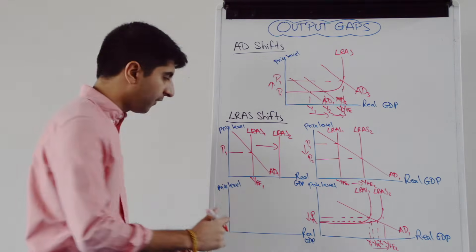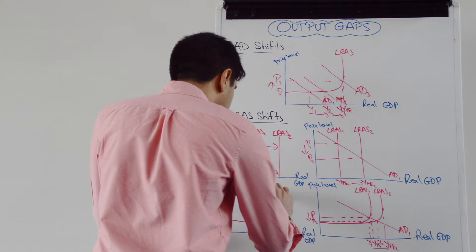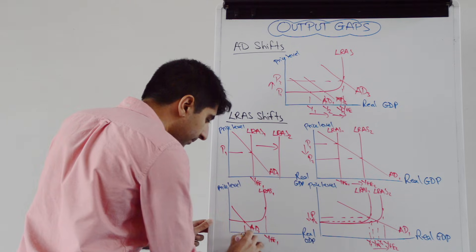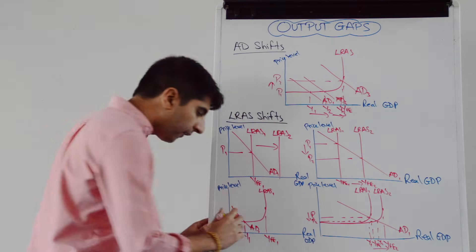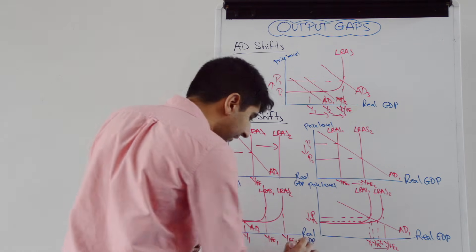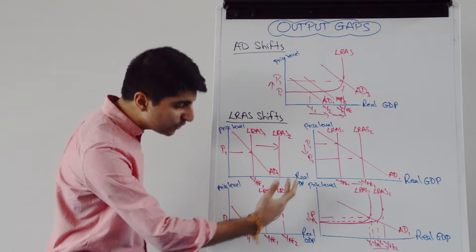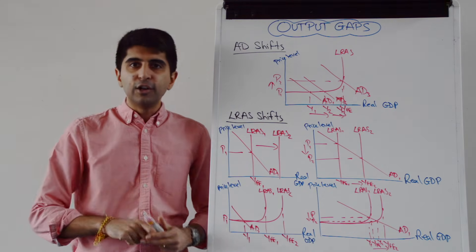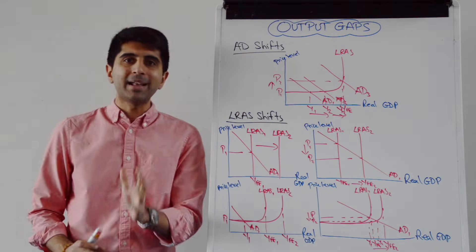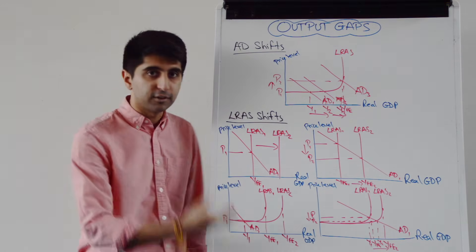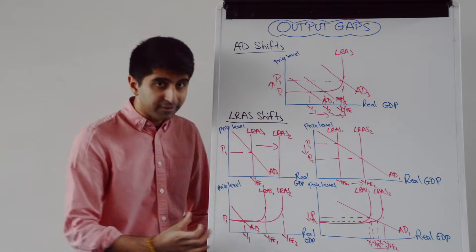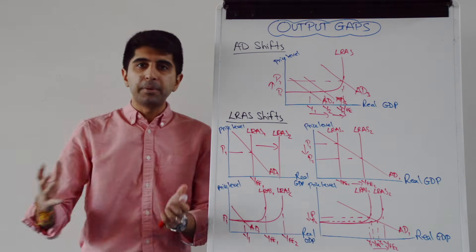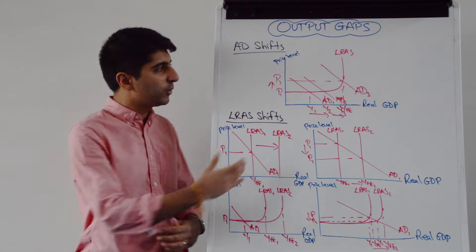We can show exactly the same thing on a Keynesian LRAS diagram. There's LRAS and there is YFE. But if AD is way down here, with equilibrium of Y1 and price level P1, what if LRAS shifts to LRAS2? Again, there isn't enough aggregate demand in the economy to make any use of that shift — such a large negative output gap that the shift of LRAS is redundant. In this case, what is needed is not LRAS-shifting policies like supply-side policies, but demand-side policies — Keynes would argue — to get aggregate demand closer to the full employment level of output. Supply-side policies, when the economy is in deep recession with a huge negative output gap, are going to be useless. Demand-side policies are the only way in which the economy can grow.